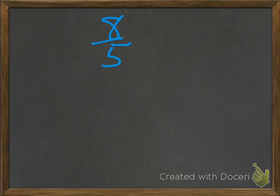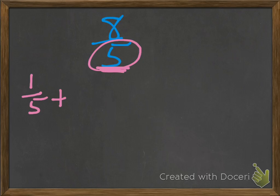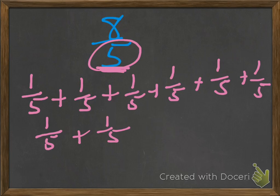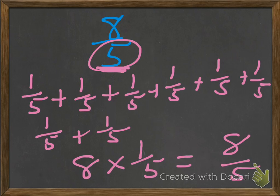How did you do? Since our denominator is 5 and our numerator is 8, we know the denominator stays 5 throughout. We could write 1/5 plus 1/5 plus 1/5 plus 1/5 plus 1/5 plus 1/5 plus 1/5 plus 1/5 — eight 1/5s added together. Or we could multiply: 8 times 1/5 equals 8/5.